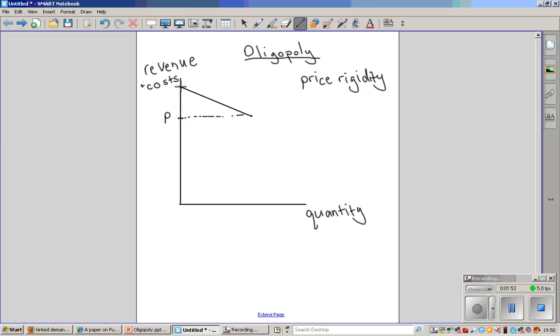I'll leave out the MR curve for now, because we need to add one more thing. I'm going to include in here, I'm going to drop from this point down to get our quantity. Because above this price, you'll see that the demand curve is relatively elastic. That's because if a firm operating in an oligopoly increases their price, they tend to lose a significant amount of customers.